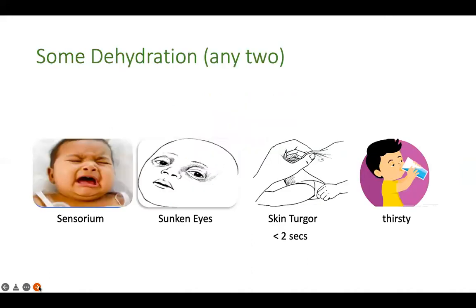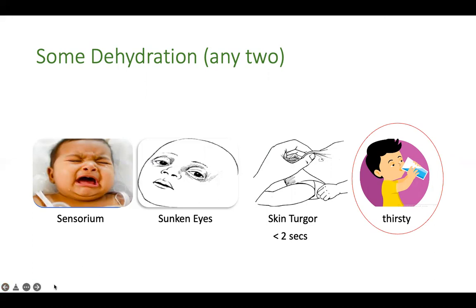For some dehydration: if the child is irritable, has sunken eyes, the skin turgor returns to normal within two seconds, and the child is unusually thirsty — thirst is an important sign of some dehydration. If any two of these are positive, you can classify it as some dehydration, which means the patient has lost at least seven to eight percent of fluid.